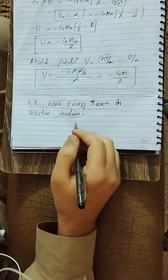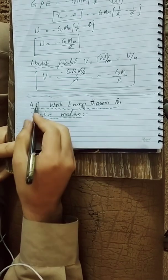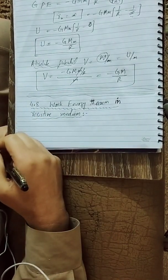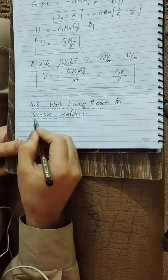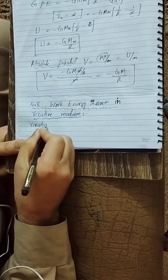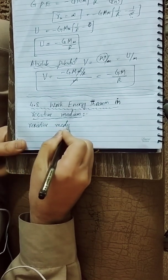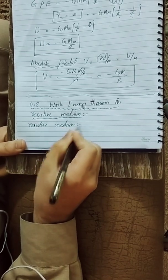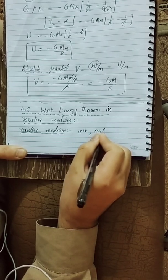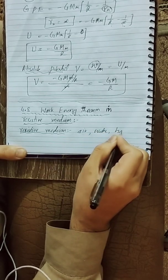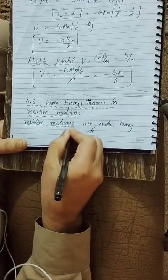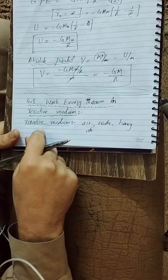Bismillahirrahmanirrahim. Assalamualaikum dear students. Today we have another topic: 4.8 Work Energy Theorem in the Resistive Medium. First, let's talk about the resistive medium. A resistive medium is one which has some resistance, some opposition — like air, water, honey, mercury — any medium which offers resistance.